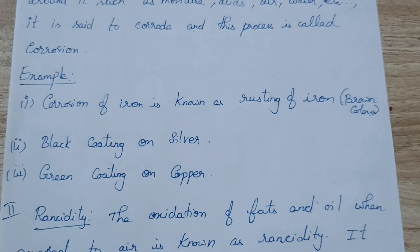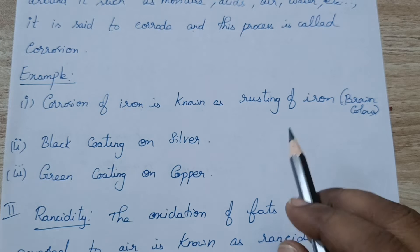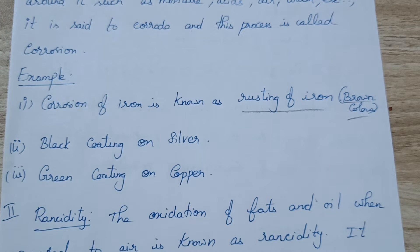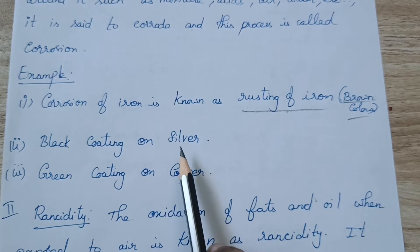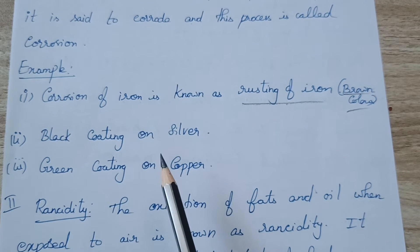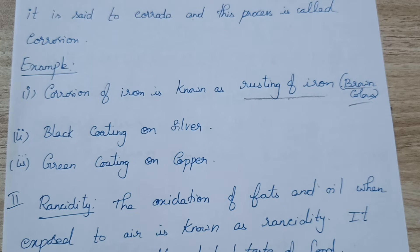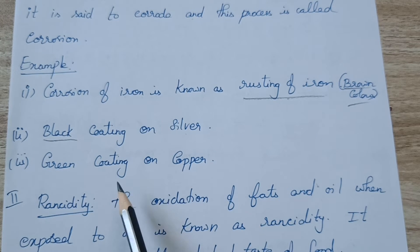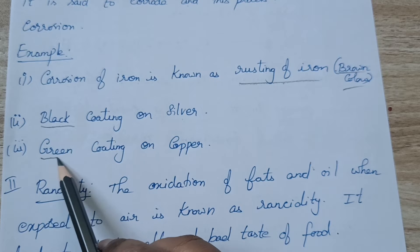When iron gets rusted, it becomes brown in color. Likewise, silver will also get eroded; after erosion the color will change to black — a black coating on silver. We girls used to wear this anklet, and that will turn black when used for a long period because it reacts with water and air. On copper, you will get a green coating.